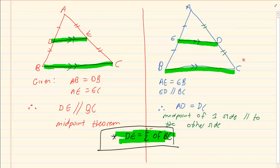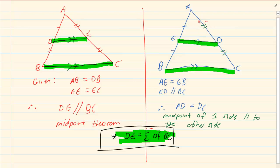In your grade 10 work there were two theorems that you learned. The midpoint theorem: you were given that the sides are equal and then immediately you can say it's parallel. The next one was that you had the midpoint of one side and that it's parallel, so immediately you could tell me that the third side bisects.